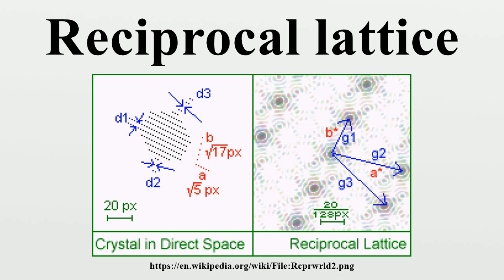Simple hexagonal lattice: The reciprocal to a simple hexagonal Bravais lattice with lattice constants c and a is another simple hexagonal lattice with lattice constants 2π/c and 4π/(√3·a), rotated through 30 degrees about the c-axis with respect to the direct lattice.